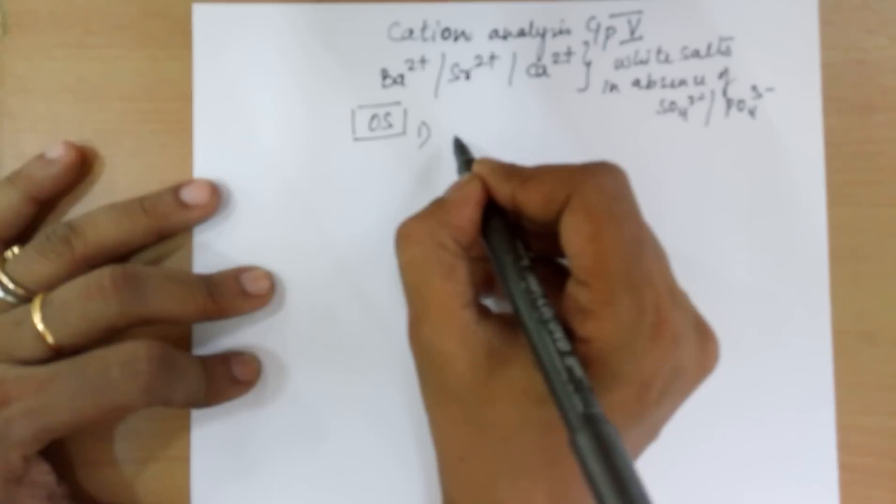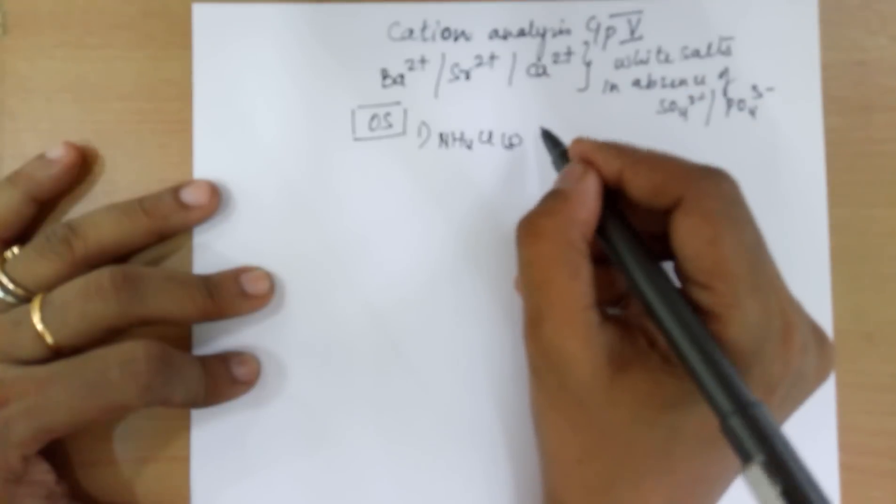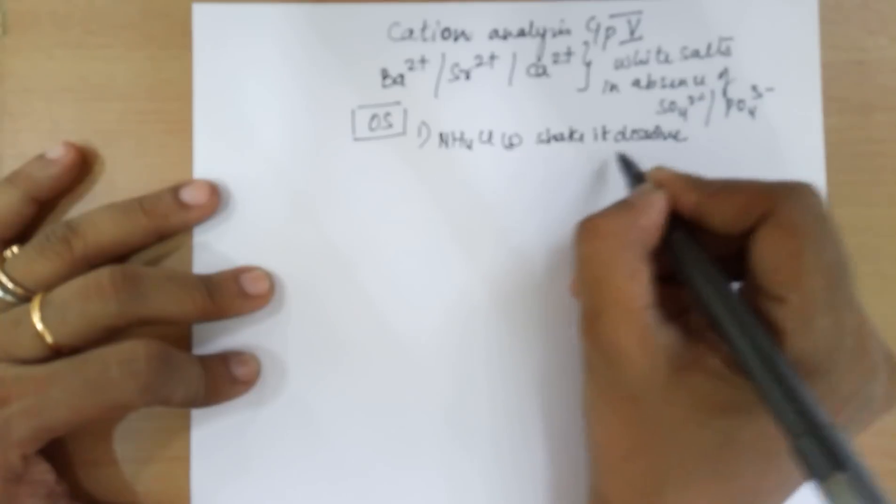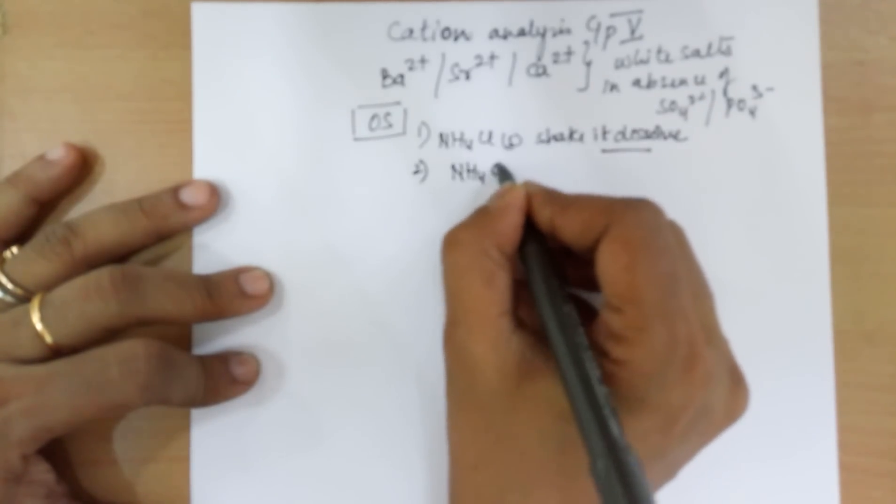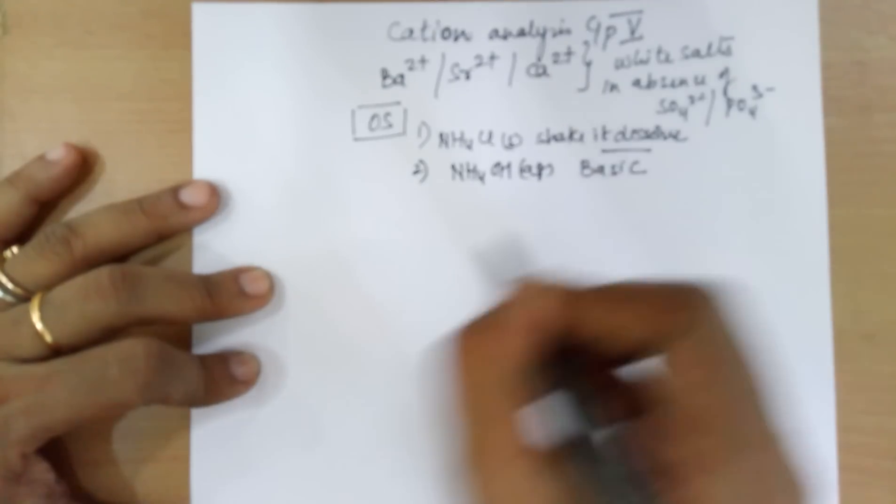To the OS, you need to add ammonium chloride solid, pinch, shake it to dissolve, which is what you normally forget. Secondly, add ammonium hydroxide aqueous to make the medium basic.